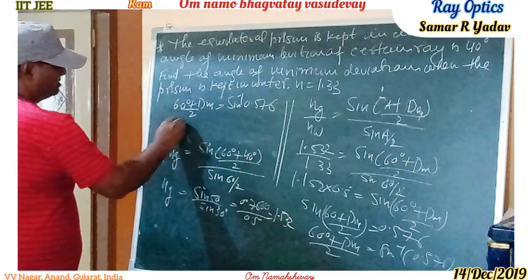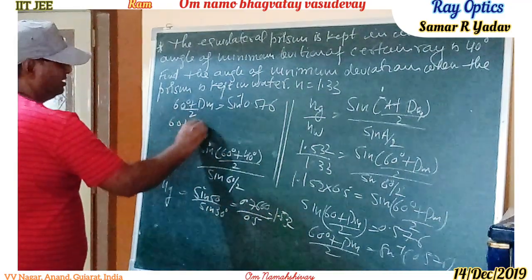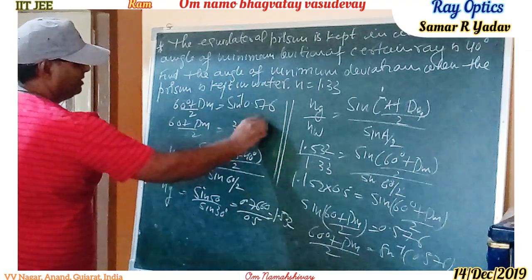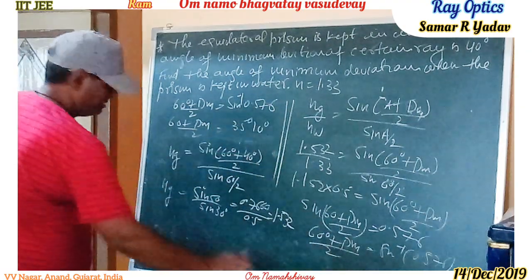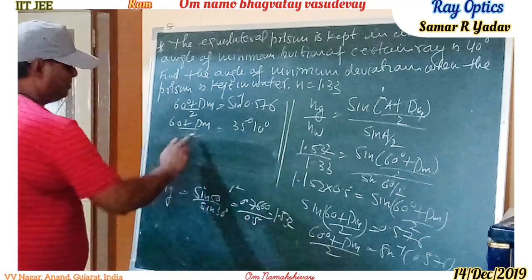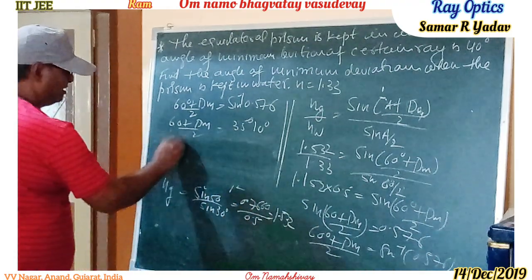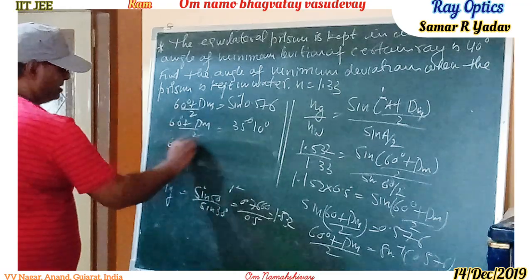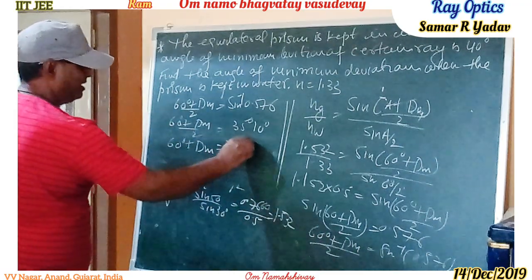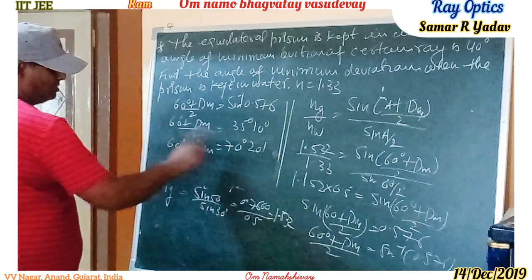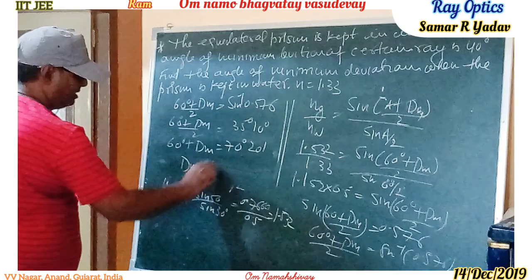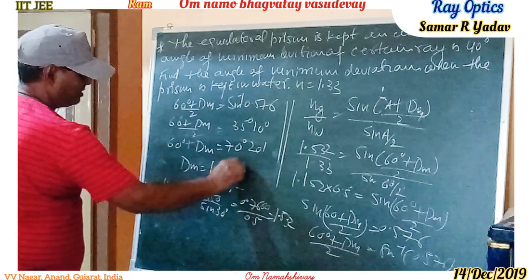So here we get (60 + δm) / 2 is equal to 35 degrees 10 minutes. Multiplying by 2 gives 60 degrees plus δm is equal to 70 degrees 20 minutes. Now, 70°20' minus 60° gives δm equal to 10 degrees and 20 minutes.